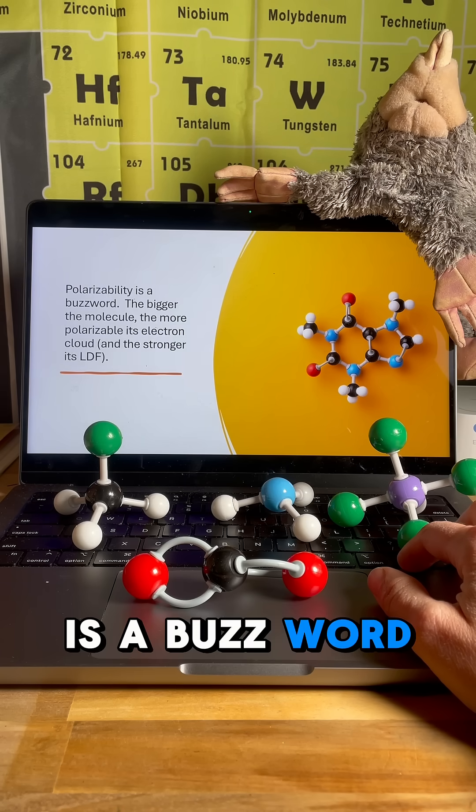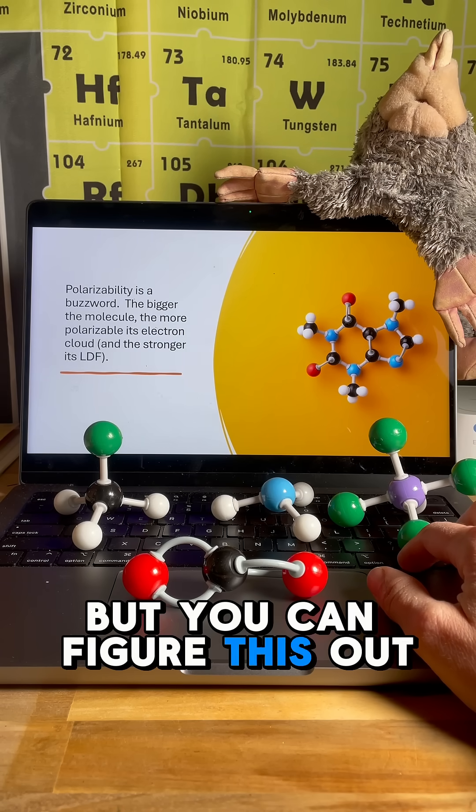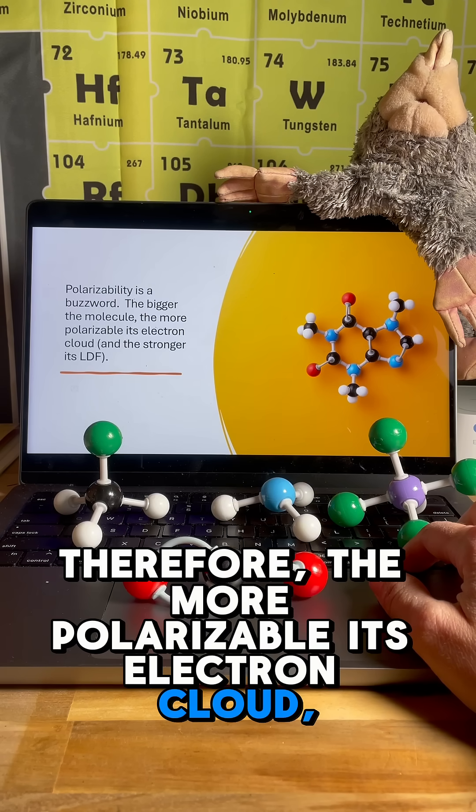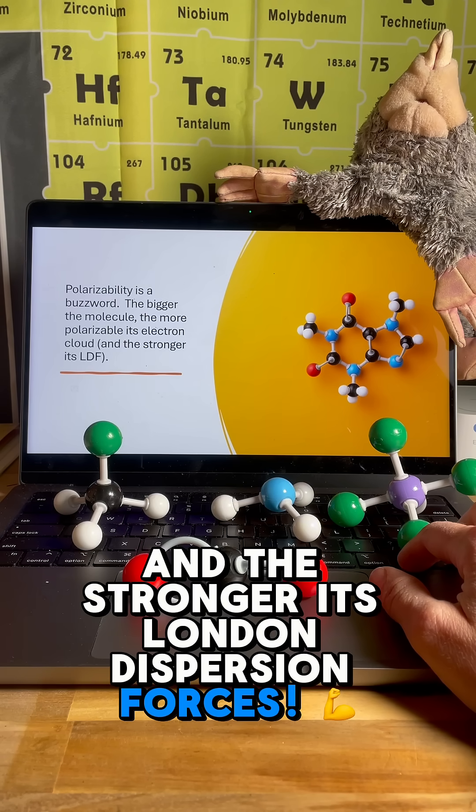Next up, polarizability is a buzzword, but you can figure this out. The bigger the molecule, the more electrons it has. Therefore, the more polarizable its electron cloud and the stronger its London dispersion forces.